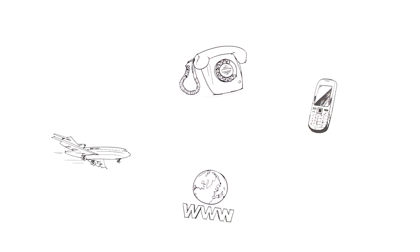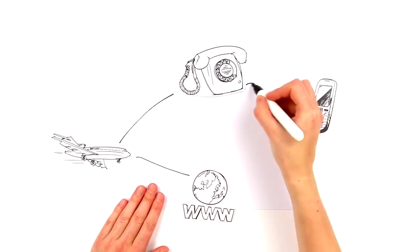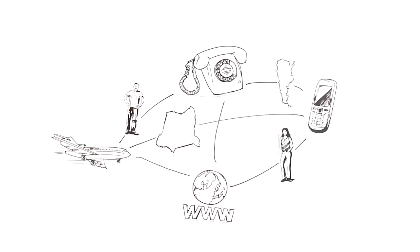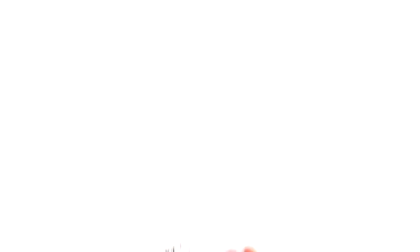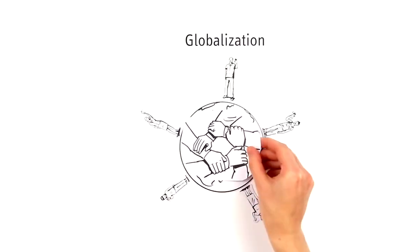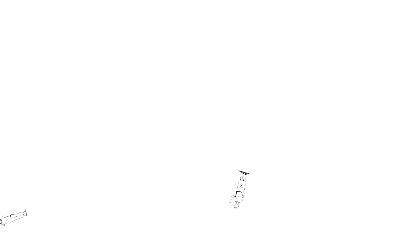This means that people and countries can exchange information and goods more quickly and in a less complicated way. This process is called globalization. Globalization comes from globe and means the worldwide coming together of countries and nations.